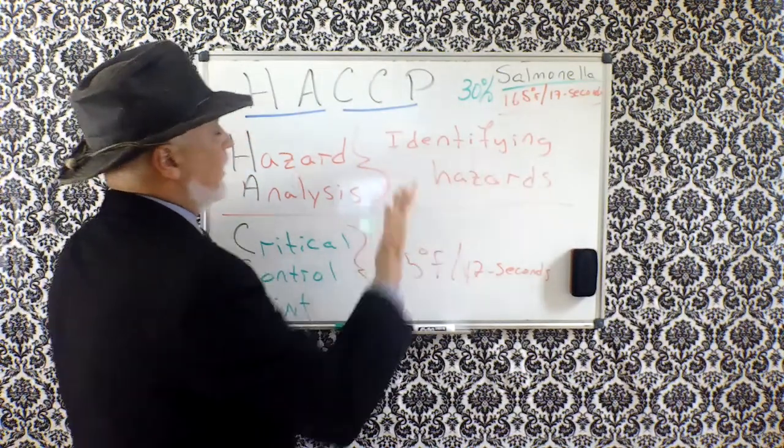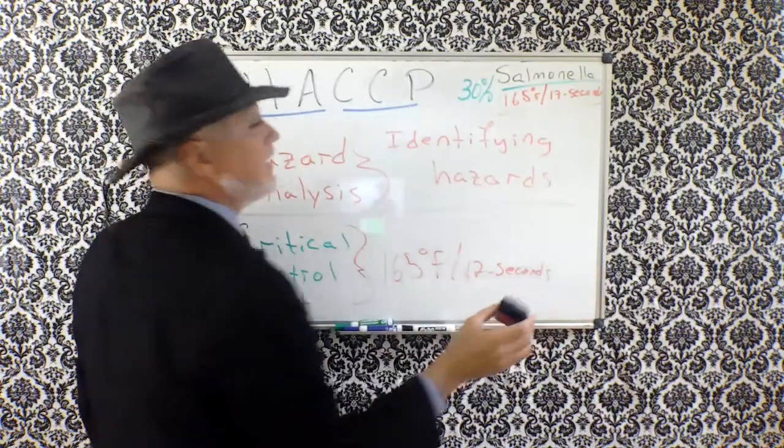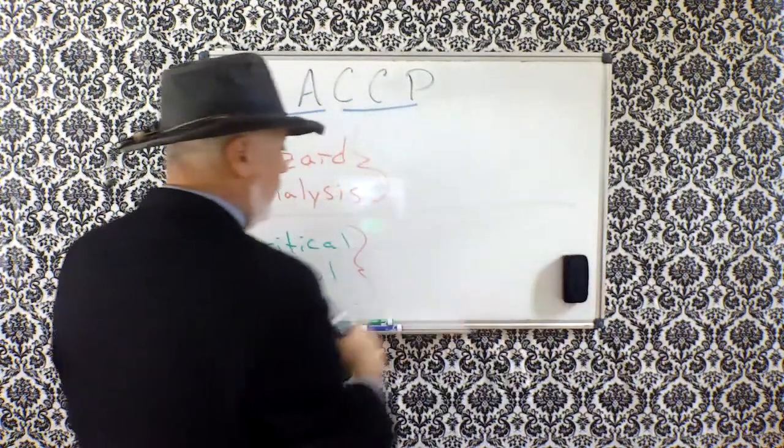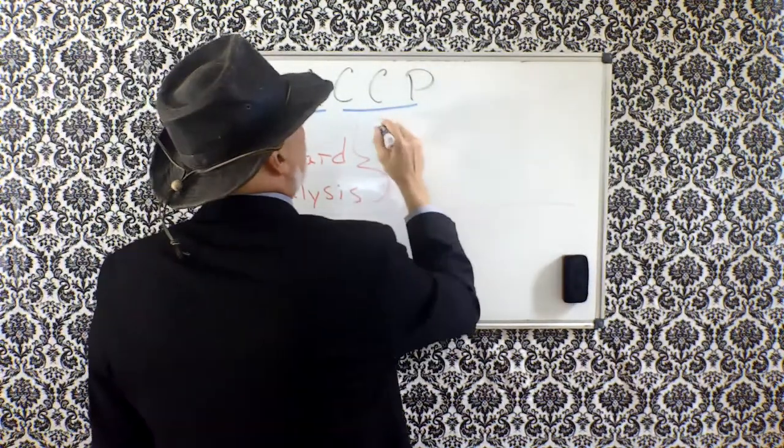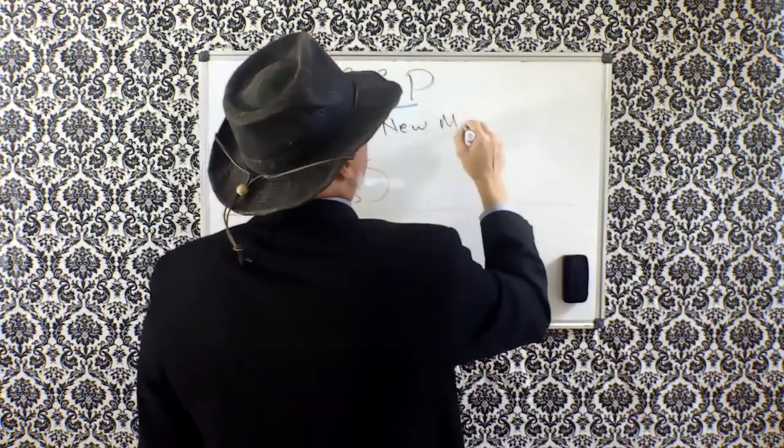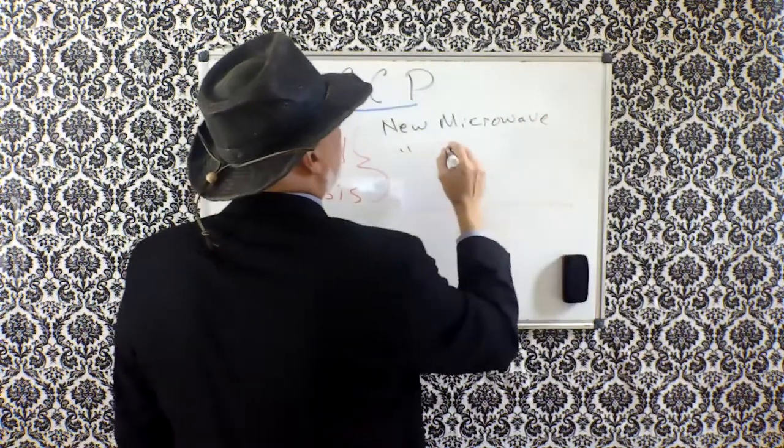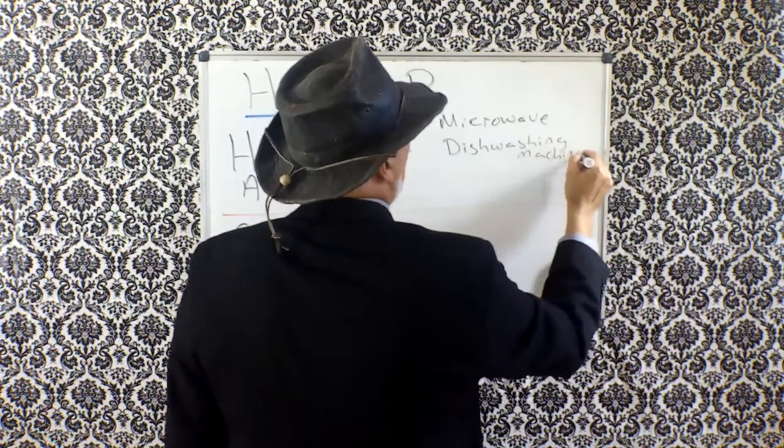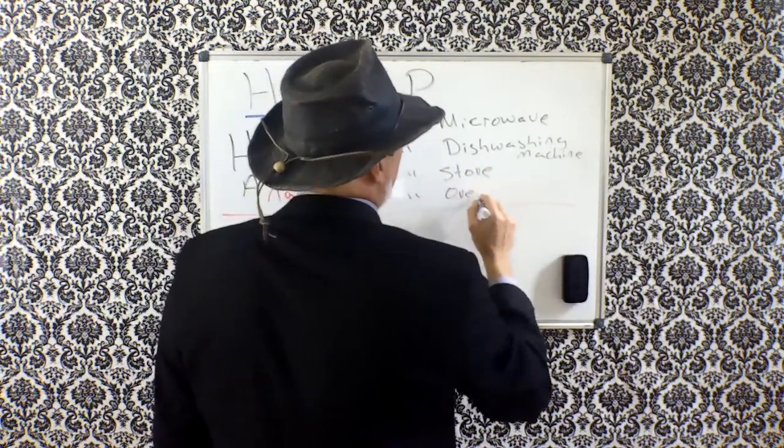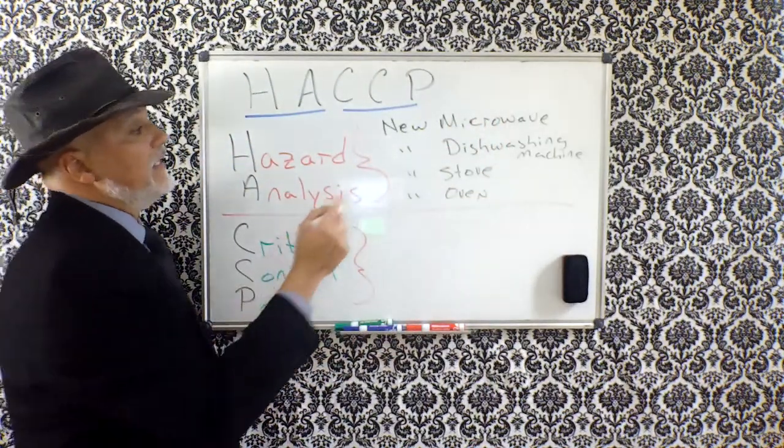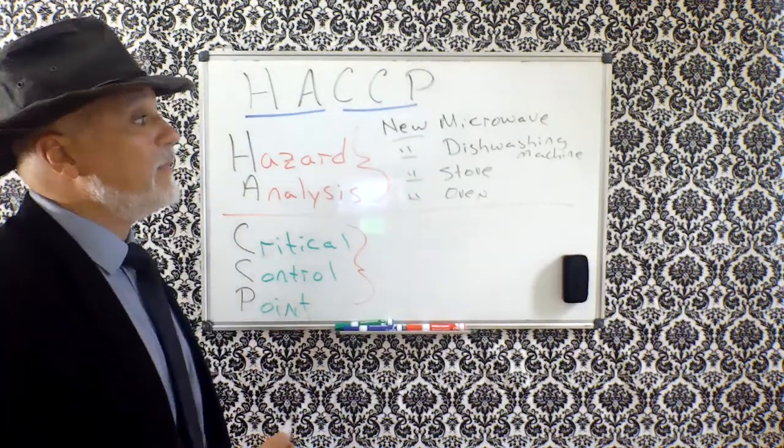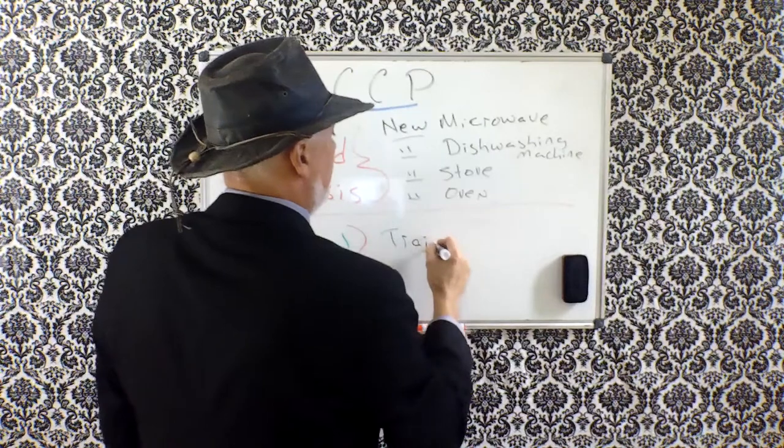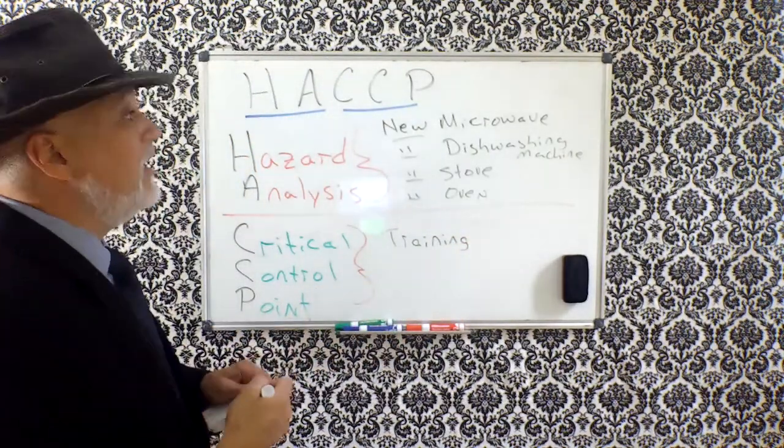So just to help you understand where you're working on hazard analysis critical control point. So then your question is, well okay, so then what's the use of hazard analysis if we know about chicken? Okay, so now let's start looking at some hazard analysis. A hazard analysis example could very well be that the restaurant has a new microwave, or a new dishwashing machine, a new stove, a new oven, you get the picture. So the hazard analysis is that all that equipment is new and our employees may not know how to use it. So our critical control point in this scenario would be in the area of training.